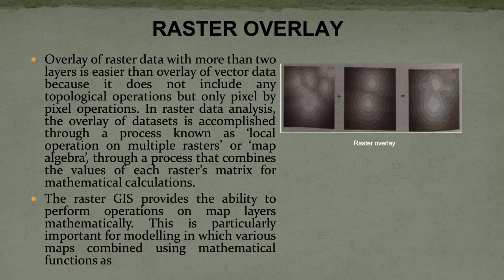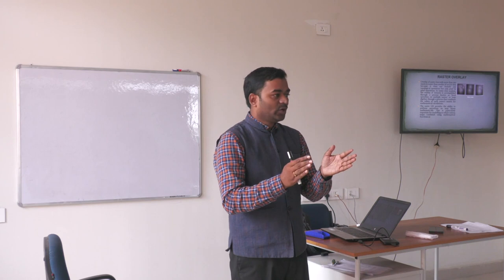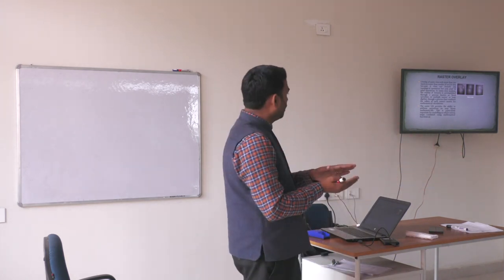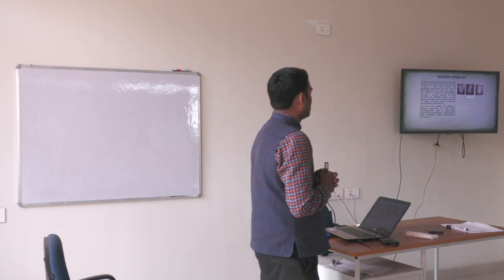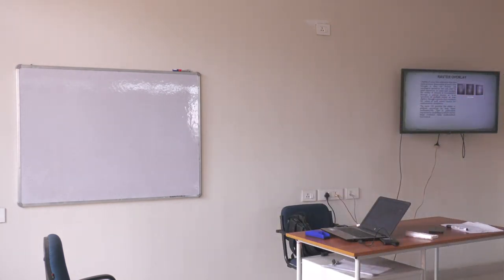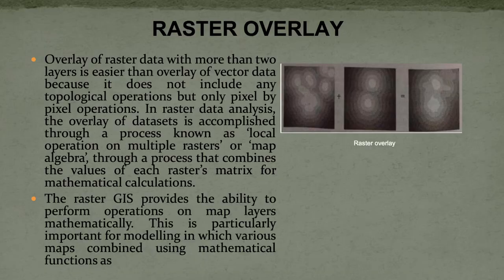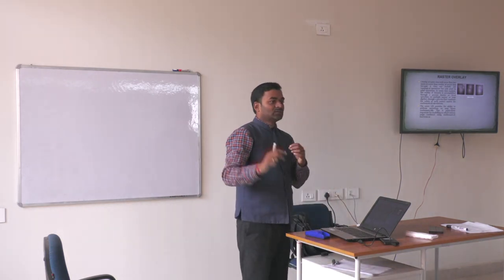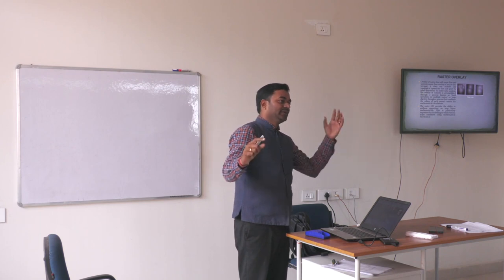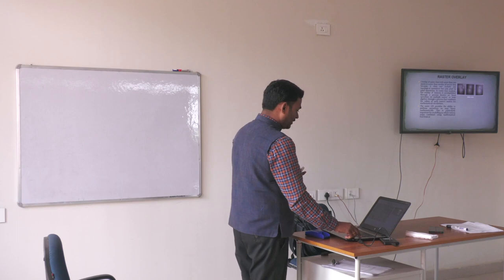The second tool is raster analysis, which is a little different from vector analysis. In vector analysis, geographical features of point, line, and polygon are overlaid directly one upon another. Whereas raster overlay analysis is pixel-based. Raster overlay with more than two layers is easier than vector data overlay because it does not include any topological operations. It involves local operations based on the value of the pixel. For example, we have land use land cover maps at different times as raster data, and wherever the same pixel values occur — say cropland here and cropland there — they will be merged together in raster format.